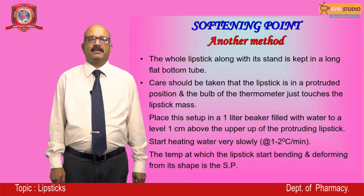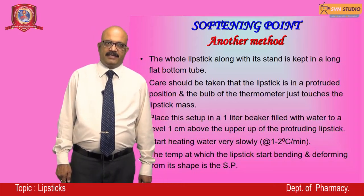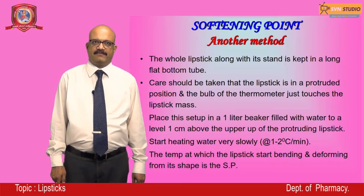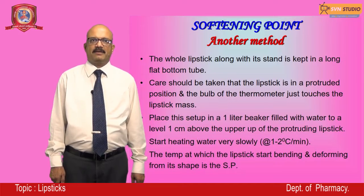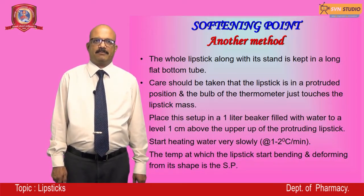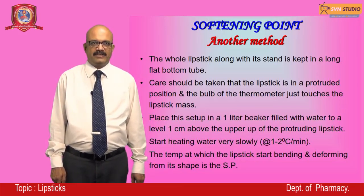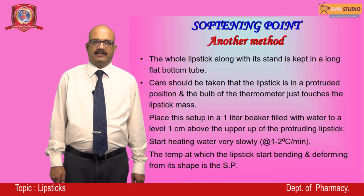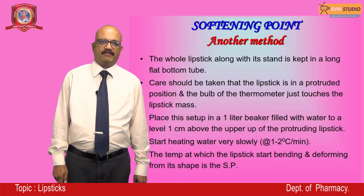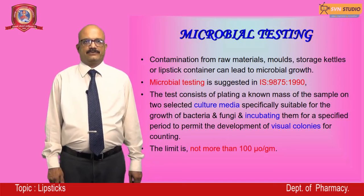The softening point can also be determined by another method: the whole lipstick along with its stand is kept in a long flat-bottom tube, with the lipstick in a protruded position and the bulb of the thermometer just touching the lipstick mass. This setup is placed in a one-liter beaker filled with water to a level one centimeter above the top of the protruding lipstick. Water is heated slowly at a rate of 1 to 2 degrees centigrade per minute. The temperature at which the lipstick starts bending and deforming from its shape is the softening point.